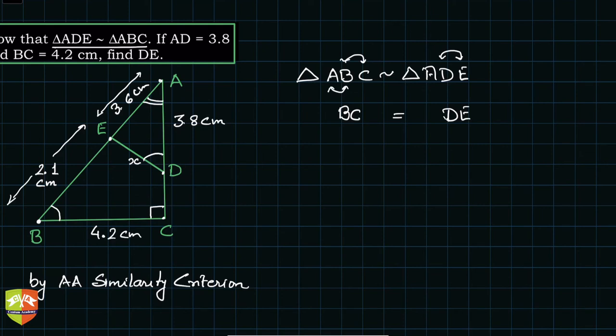And then we just need to know one more side. So AB, we know AB, so let's write AB here. So BC by AB. And AD, so corresponding to AB is AD, so let's write AD here.